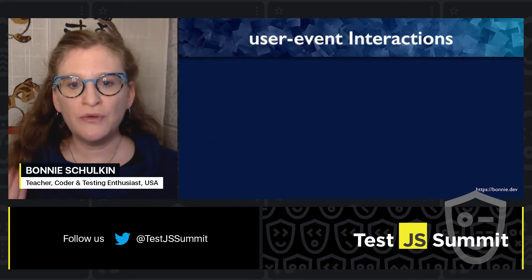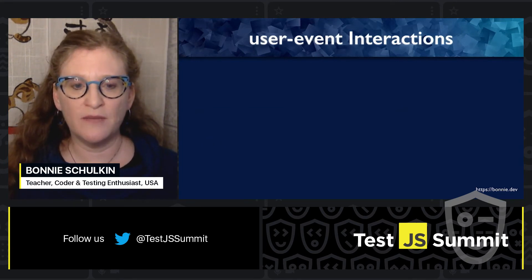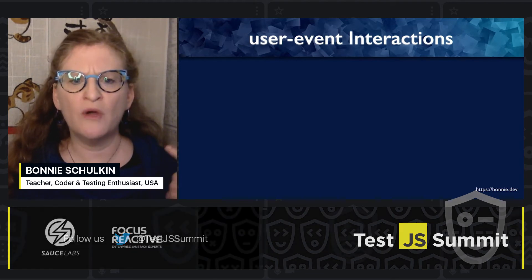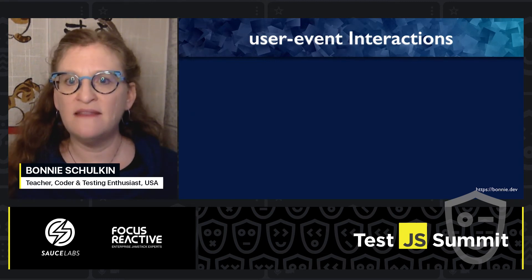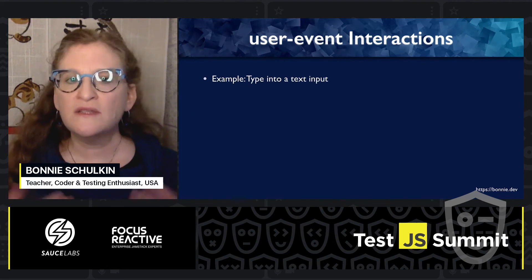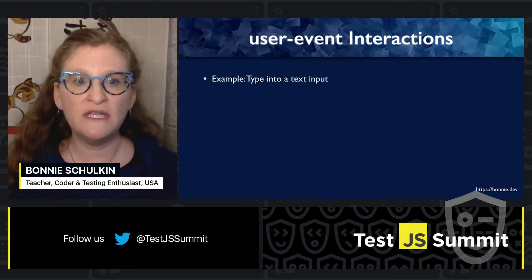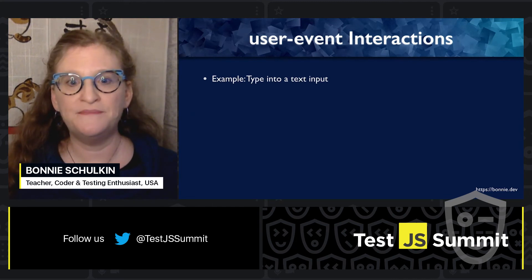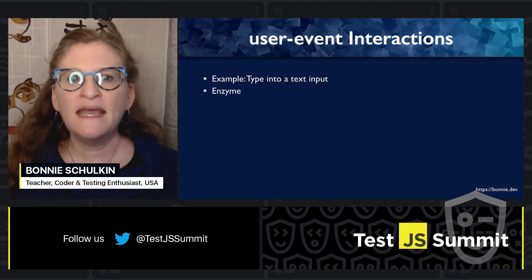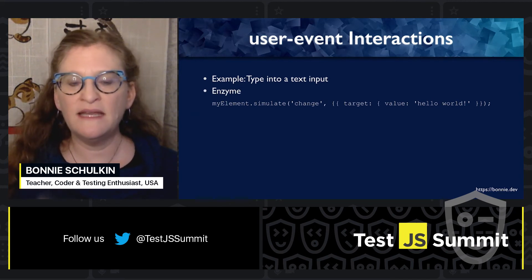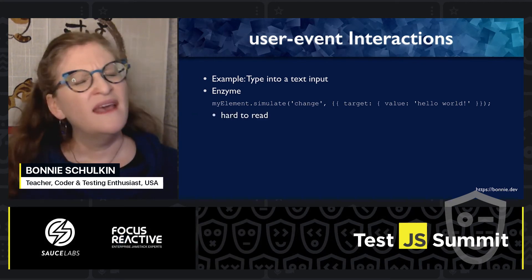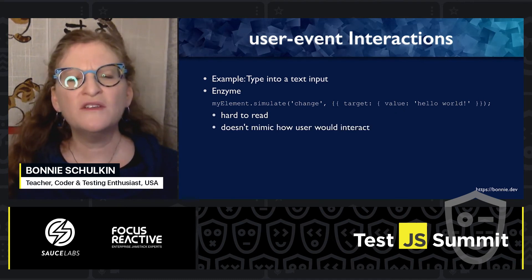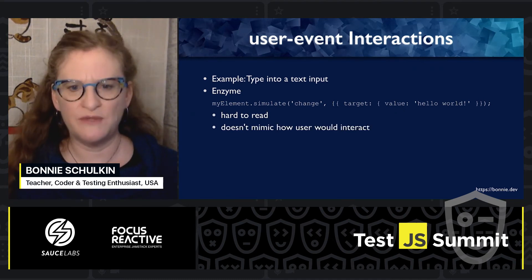I'd like to talk about two libraries in the Testing Library ecosystem that really improve your code, showing some contrast between how the code would look in Enzyme versus Testing Library. The first library is user-event, and this is for interactions. Take an example where you need to type input into a text input. In Enzyme, your code would look like this — you would be simulating a change where you change the target value. This is not terribly readable, and it doesn't mimic how users interact. Users don't send change events.